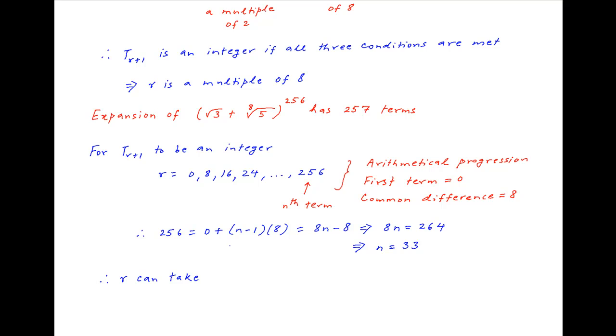Therefore, r can take 33 values so that t_{r+1} is an integer. In other words, the number of integer terms in the expansion is 33, which is the required answer.